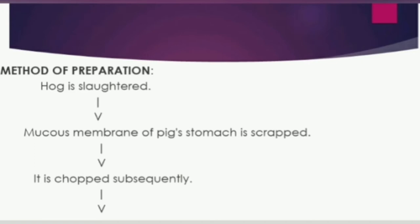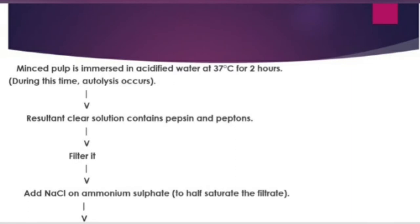First, the animal must be slaughtered. Taking pig as an example — from the pig, you scrape the mucous membrane layer and collect it. Then you chop it many times until it reaches a minced pulp consistency — M-I-N-C-E-D minced pulp. You then take that minced pulp and add acidified water, which is water with some amount of HCl, and leave it at 37 degrees Celsius for two hours.